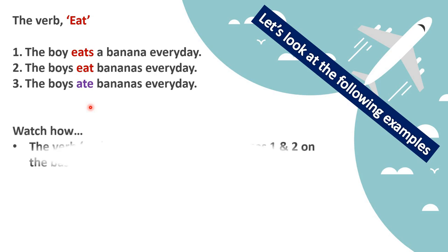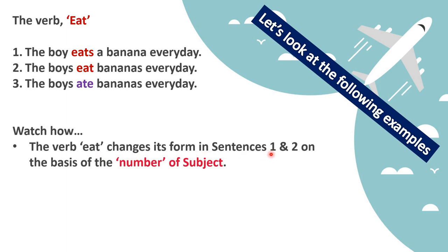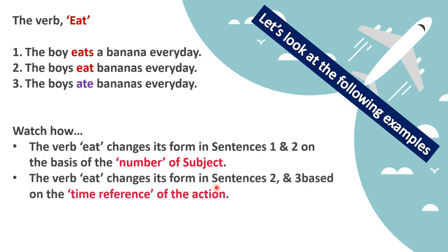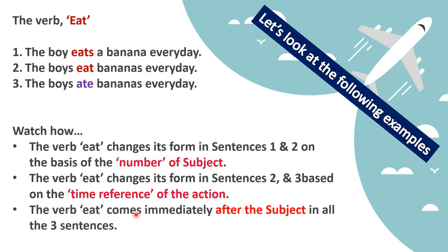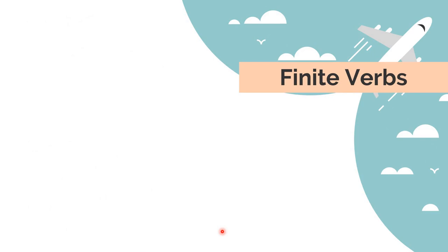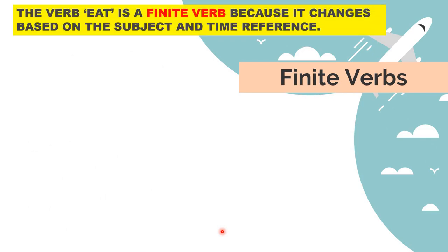Verb 'eat' changes its form in sentences 1 and 2 on the basis of the number of the subject, and in sentences 2 and 3 based on the time reference, which is tense. Also, the verb 'eat' comes immediately after the subject in all three sentences. When this happens, they are called finite verbs. Verb 'eat' is a finite verb because it changes based on the subject and time reference, and it comes immediately after the subject.